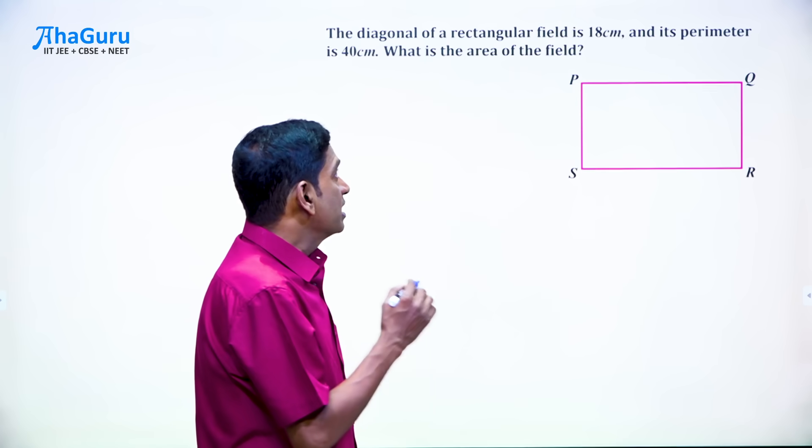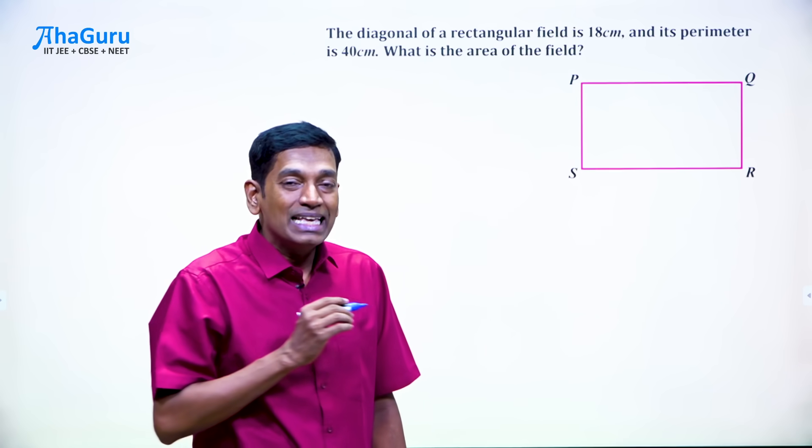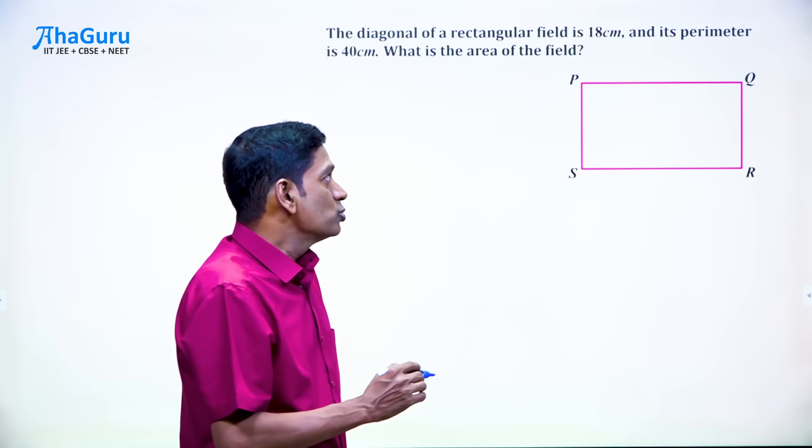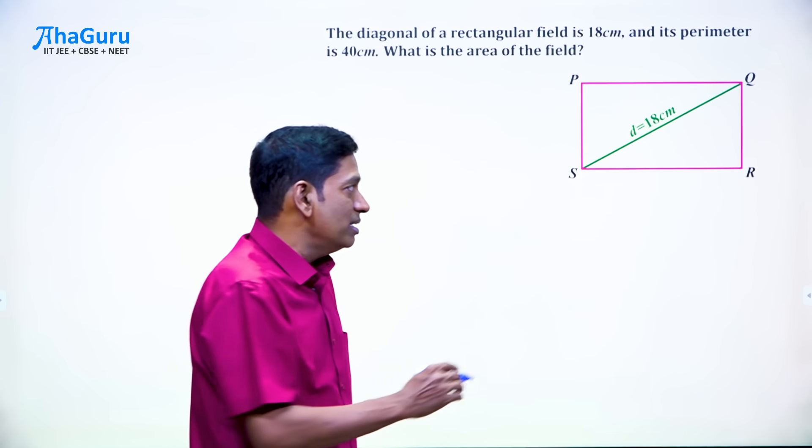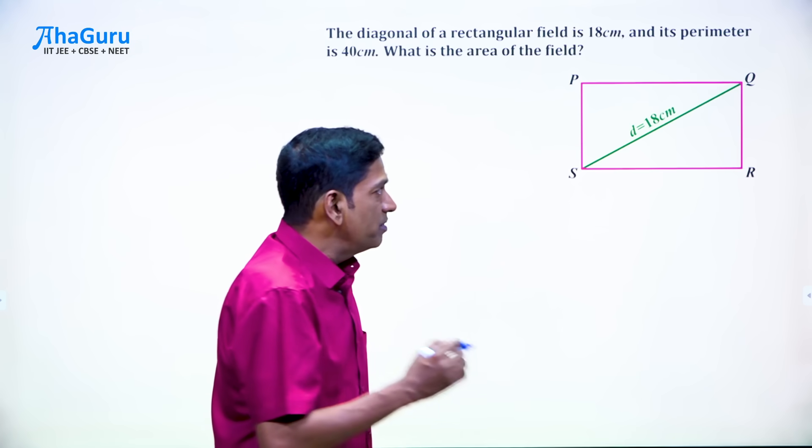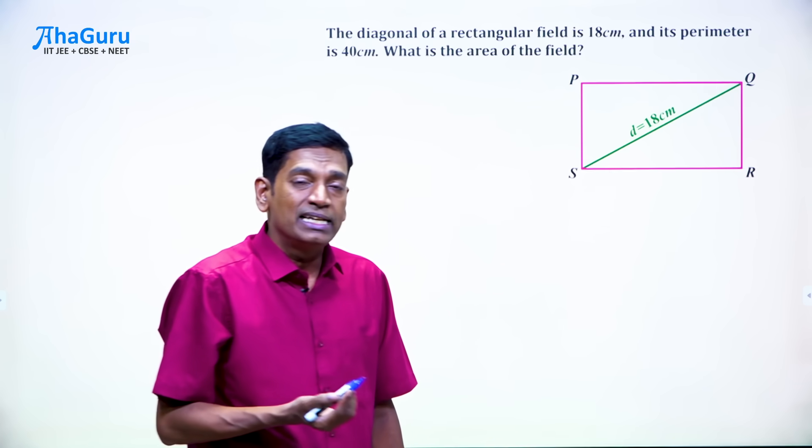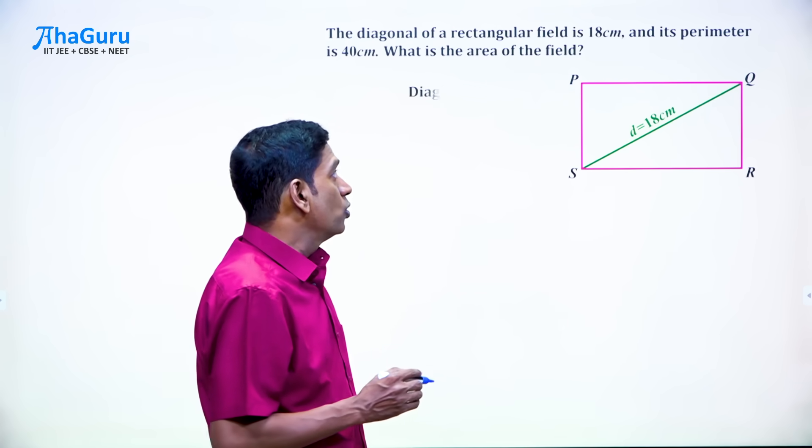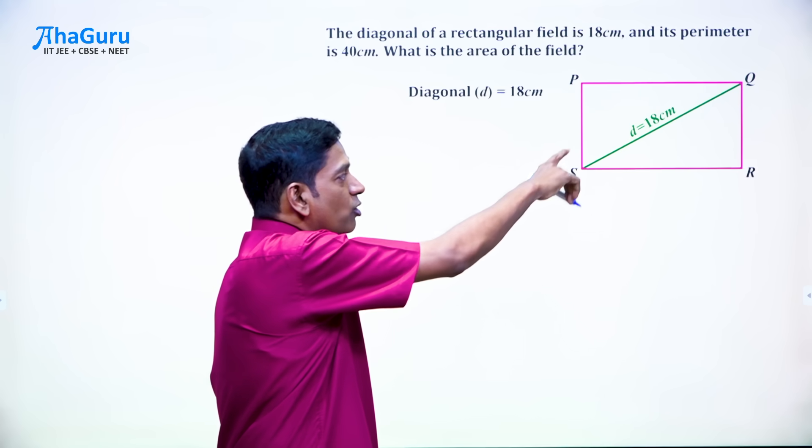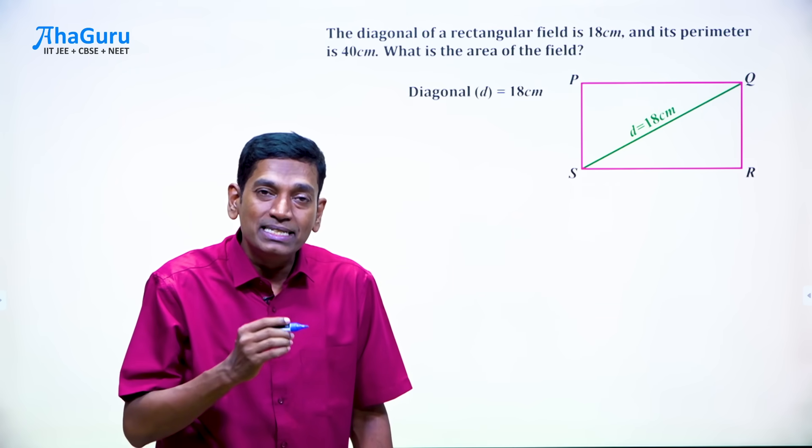Now we are given that the diagonal is 18 cm. So we can say this line is 18 cm, the diagonal SQ is what we have drawn but we of course know that PR is also 18 cm because the diagonals of a rectangle are equal. So we can say diagonal D equals 18 cm.